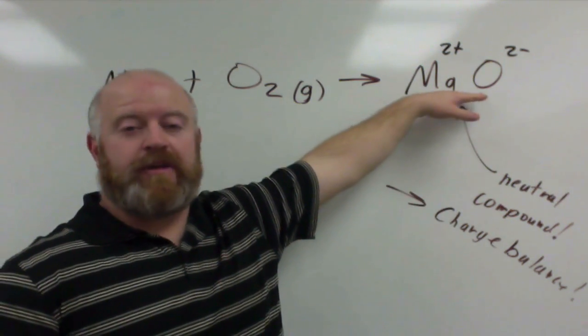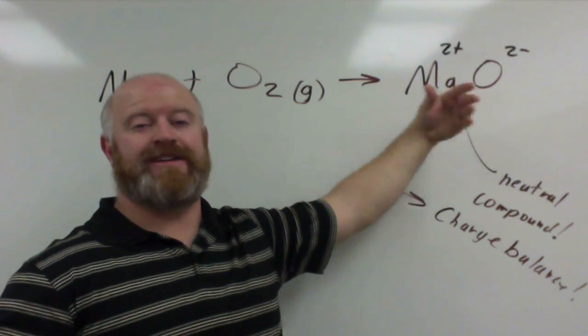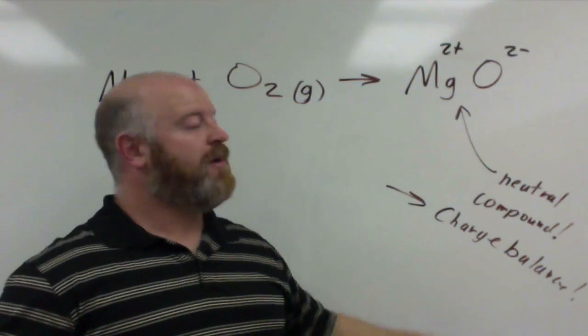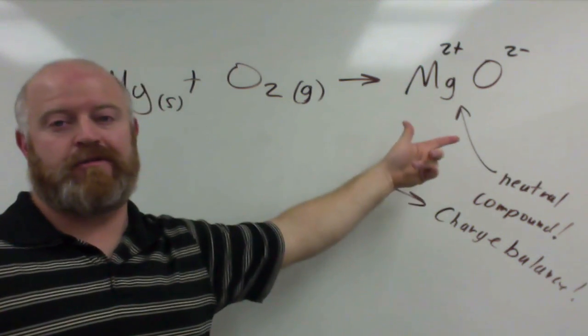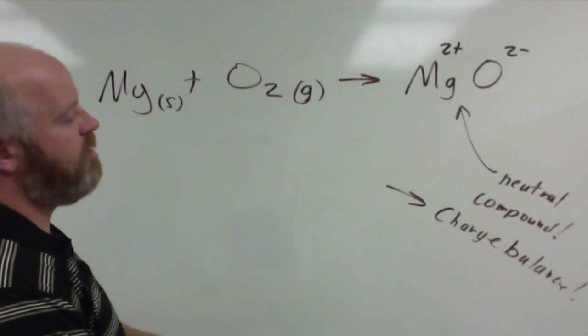This is something that we did in our last unit, the whole mastery test thing. So this is something that you should be able to do continually throughout this whole next unit. Because if you don't do that, you're going to get all of these wrong. So we have magnesium, we have oxygen, that makes the correct substance. We erase our charges.